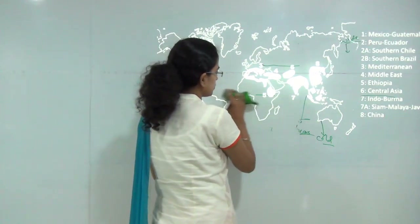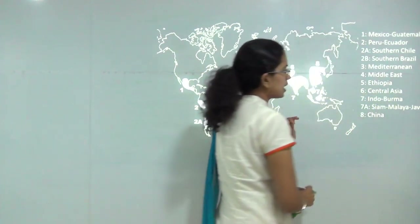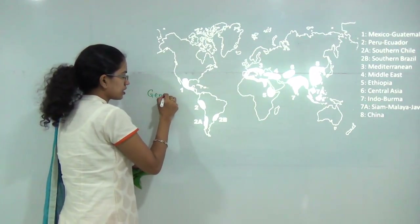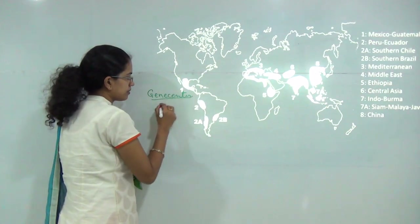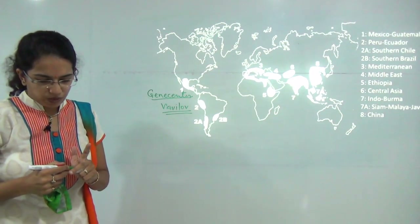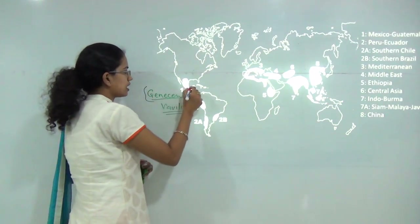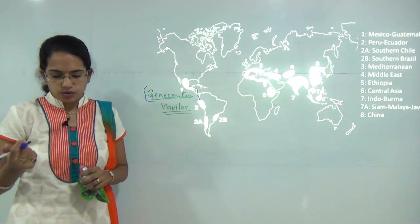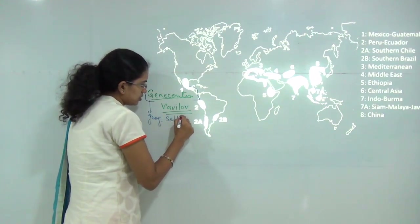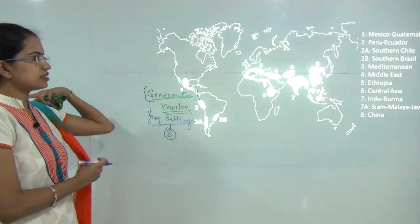Now moving to the last section: the Vavilov gene center concept. Gene centers are the areas of origin or the most widely cultivated areas in geographical settings. Vavilov's classification led to the division of regions into eight major categories. Detailed lists of plant and animal species originating in each gene center are available in the postal course.